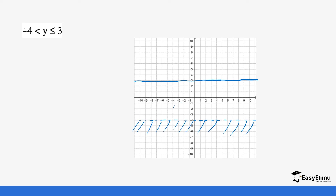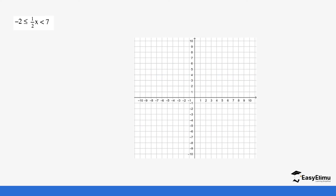For y less than or equal to three, we do not want any values greater than three, so we shade that unwanted part above three. This forms our compound inequality. Let's do more practice.